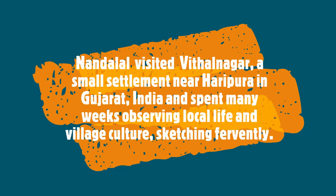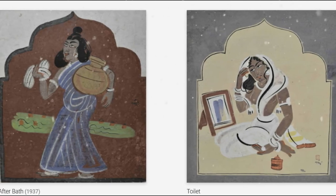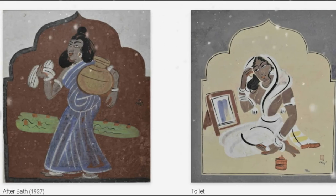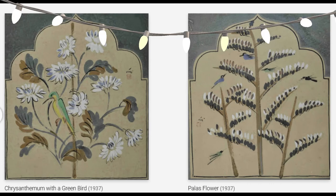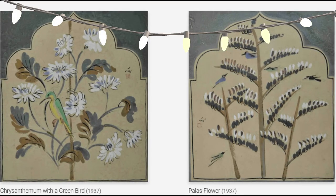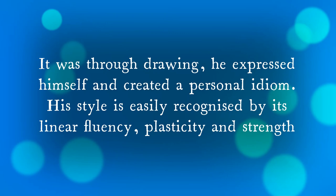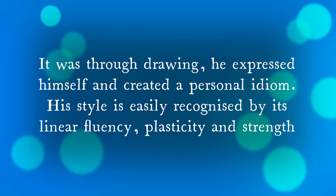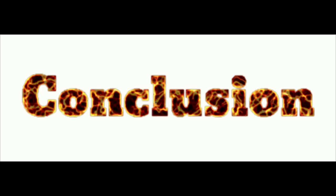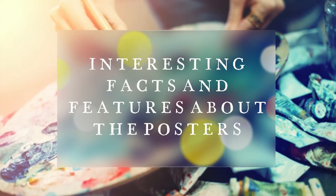Nandalal visited Vithal Nagar, a small settlement near Haripura in Gujarat, and spent many weeks observing local life and village culture, sketching fervently. He devised an imagery that would communicate itself to the ordinary village folk. In his works, the search for a utopia is informed and directed by a deep consciousness of his immediate environment and surroundings. It was through drawing that he expressed himself and created a personal idiom. His style is easily recognised by its linear fluency, plasticity, and strength. That brings us to the conclusion of the video. I hope this video has fetched you some information about the artist of the posters and some interesting facts and features about the posters. Thank you.